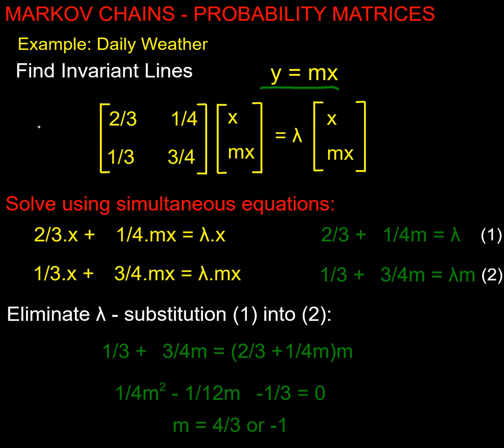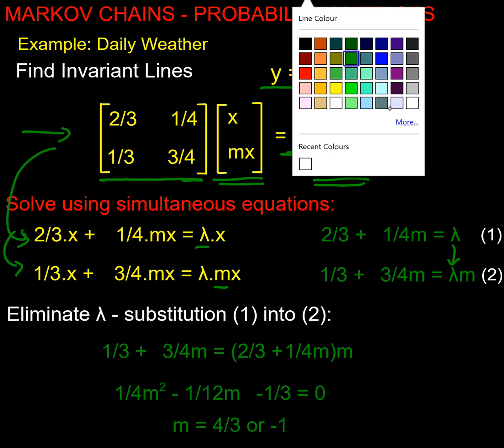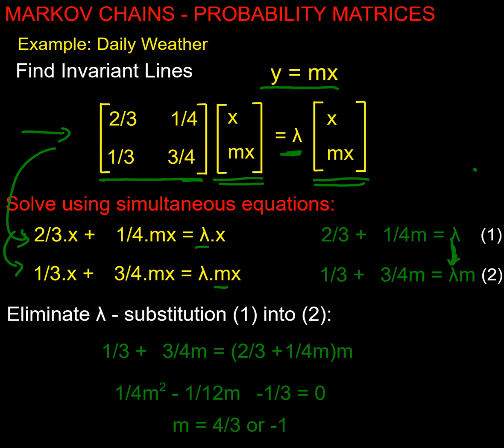Let's have a look at this as invariant line. So here's my invariant line equation: that my matrix times my line vector x mx must be some multiple of my original vector x mx. If I write that as simultaneous equations, here are my two simultaneous equations. I've got two variables now, lambda and m. I'm going to eliminate lambda and get an equation for m by substituting the top equation into the bottom equation. And if I do that, I substitute into here.